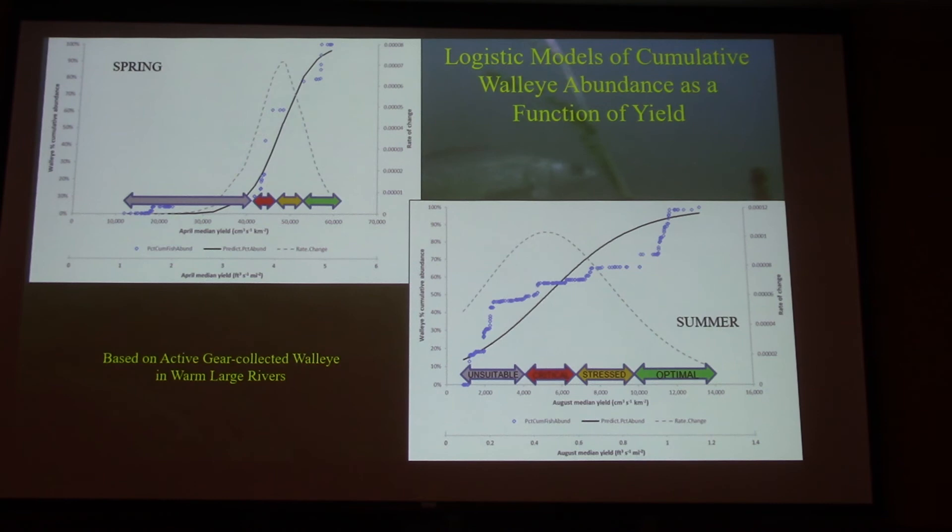Models are better with more data, right? The summer had about 350 points on which we could fit this curve and get a responsive model. The spring only had about 103 or 104, I think it was.